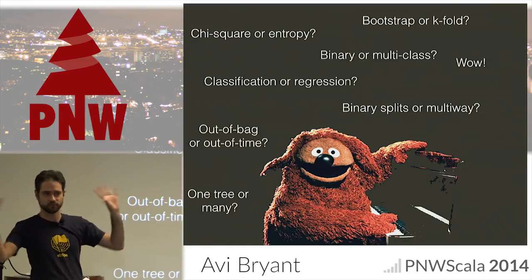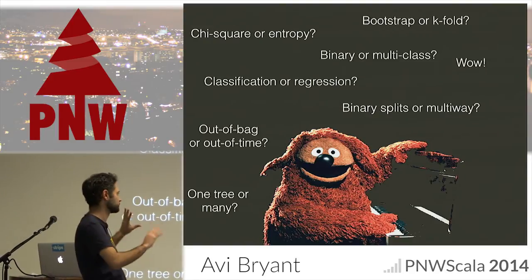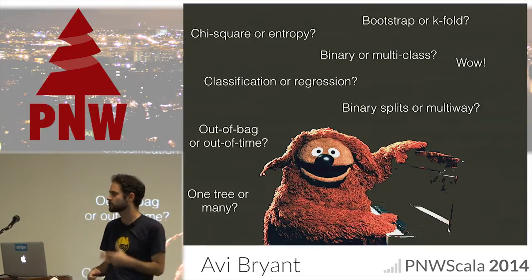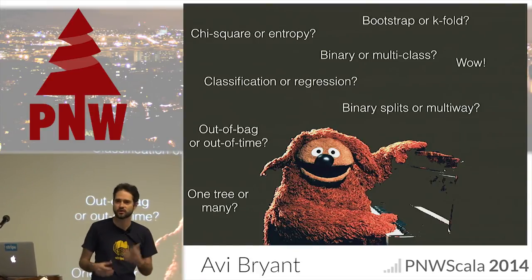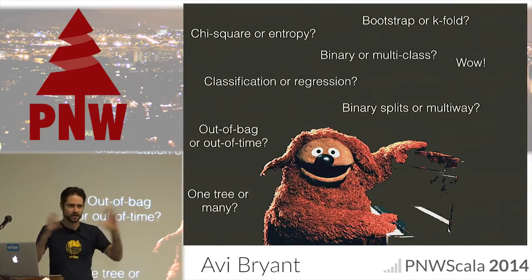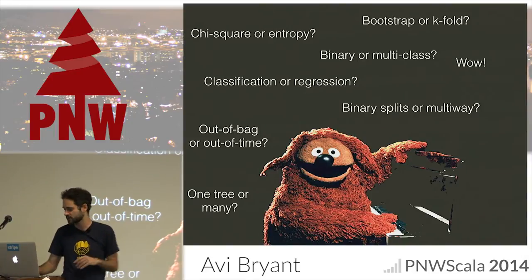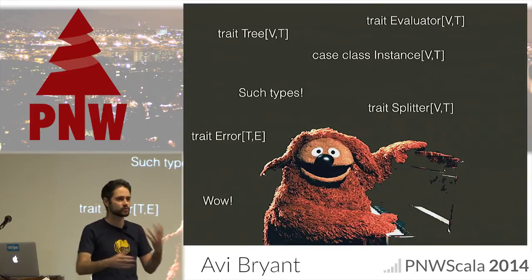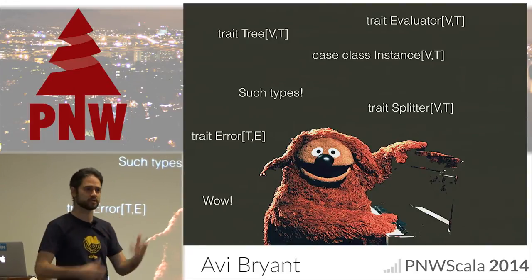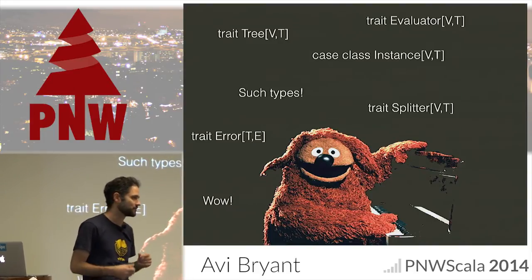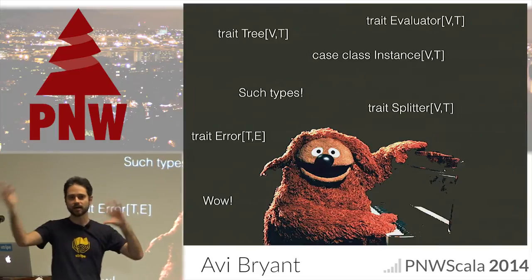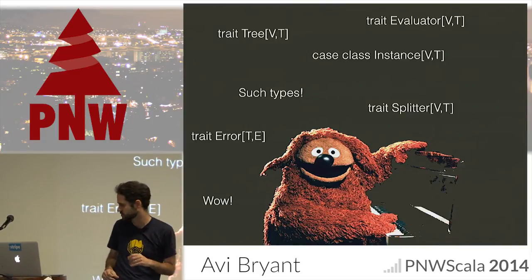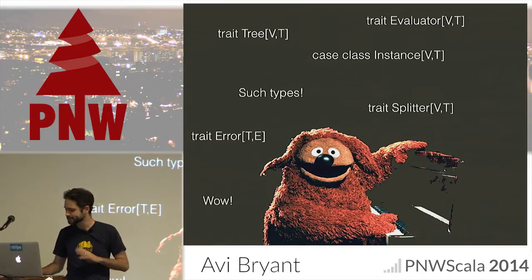The design goal with Brushfire is, rather than making any particular choice, to try to abstract away a generic way of thinking about this. Each of these choices gets represented by some type, some trait — some type parameter that lets us build up whatever we want in this space of ways of doing decision trees.